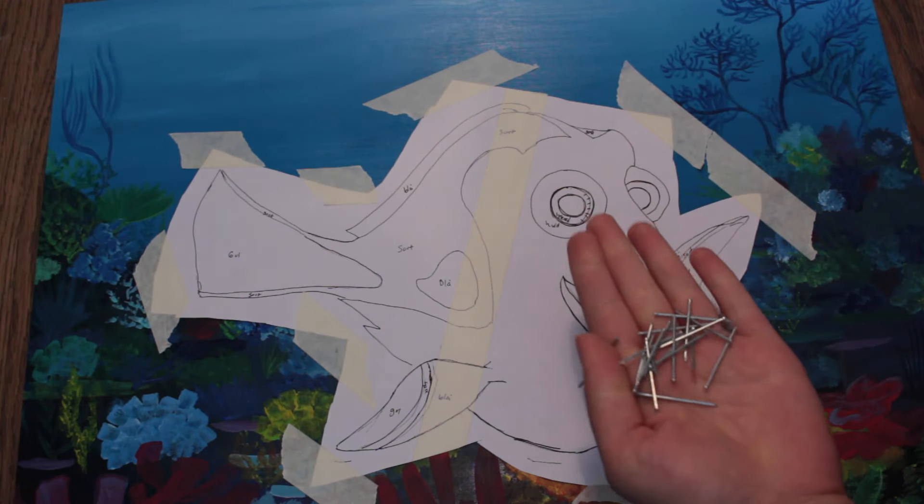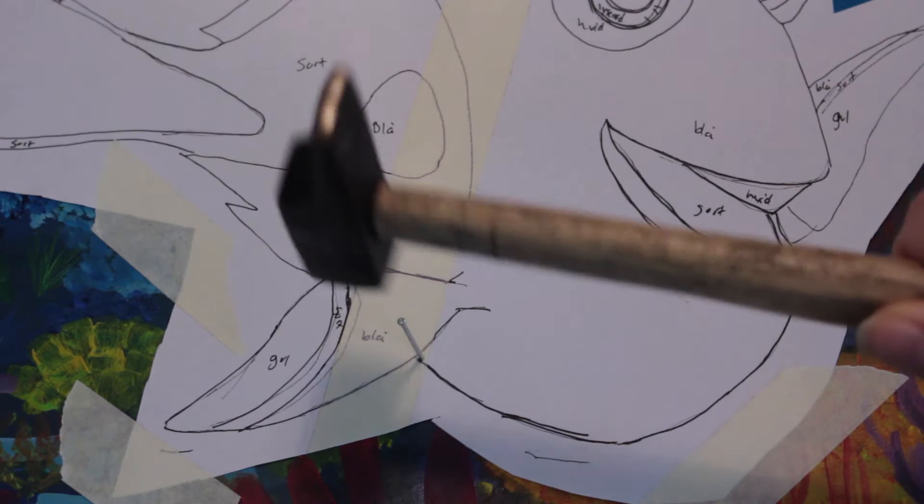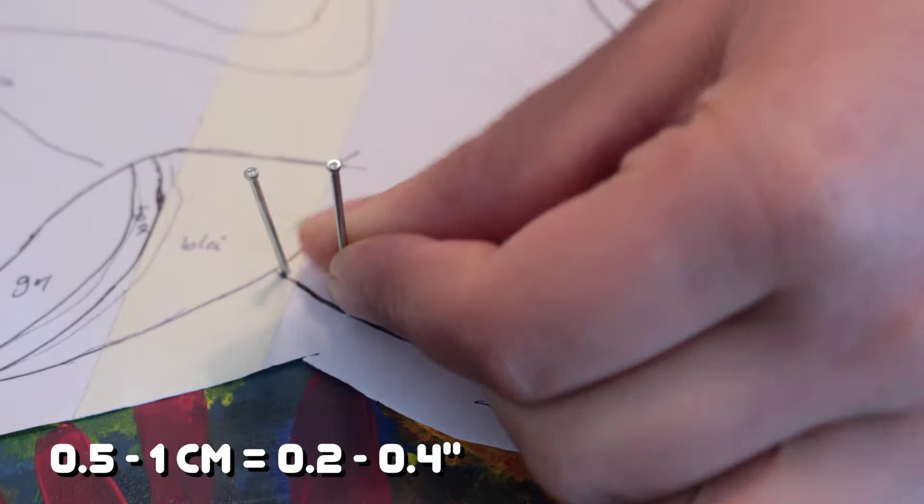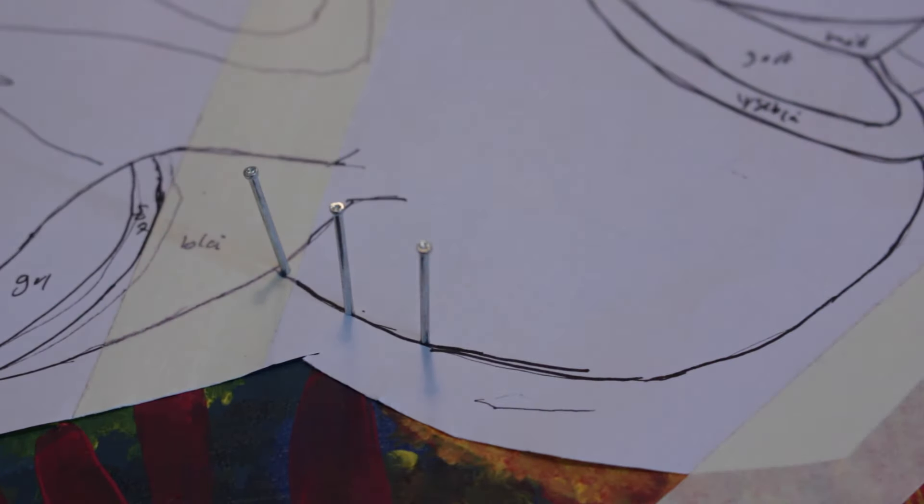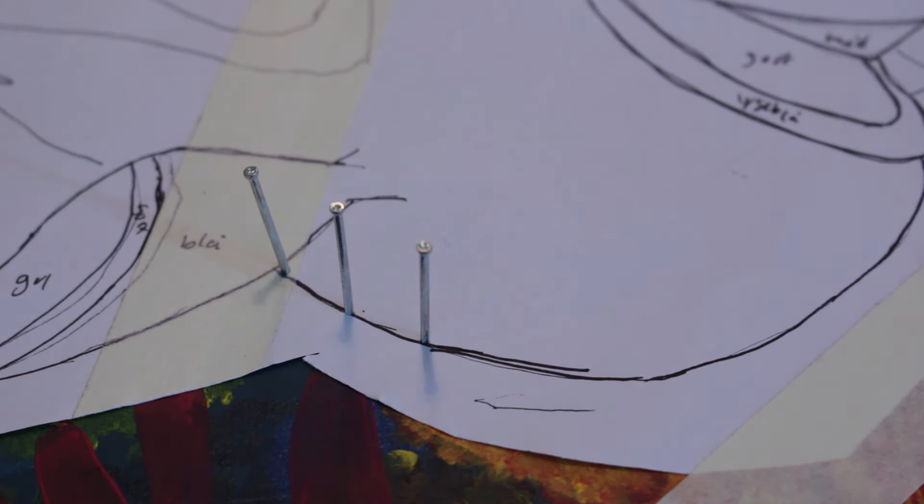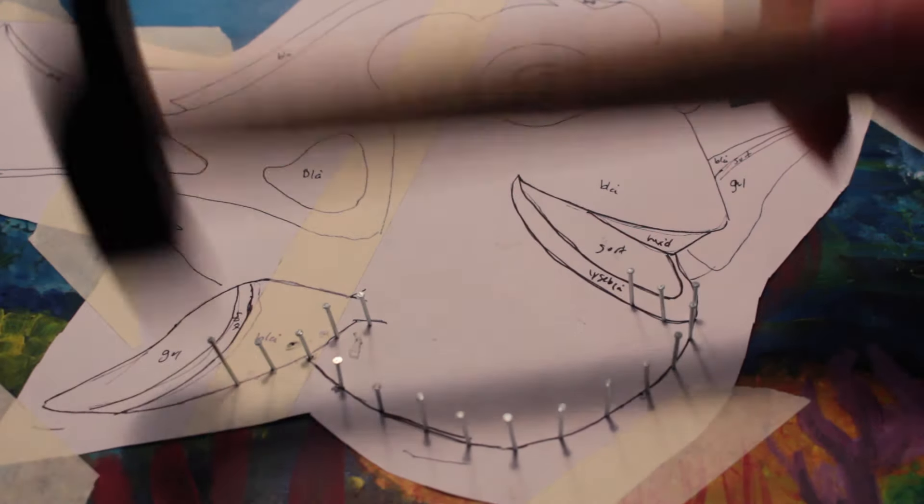Now it's time to hammer in the nails, so take one by one and hammer them in according to the lines. Try to leave a half to a whole centimeter gap between them and make sure all your nails have the same height when hammering them in. Continue on hammering the nails in until all the lines are fully covered.